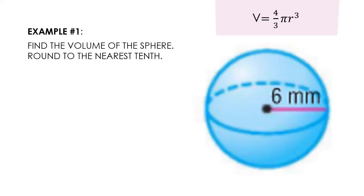Let's take a look at our first example. It simply says find the volume of a sphere, round to the nearest tenth. If you look at our picture, we have a label of six millimeters. If we remember this purple line, that is going to be your radius.